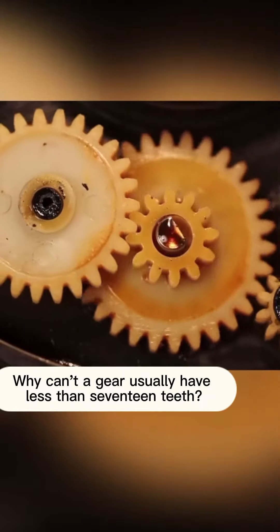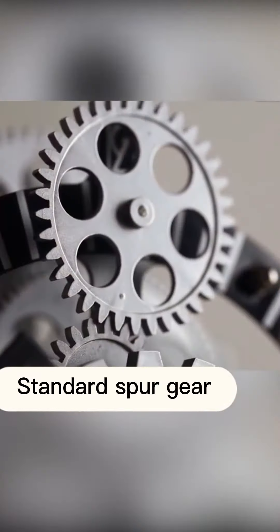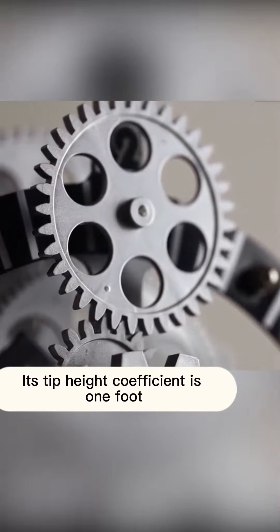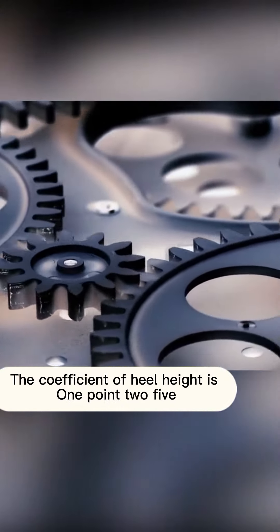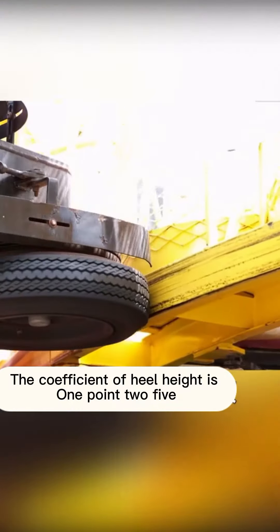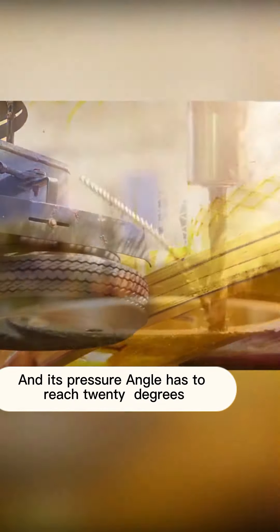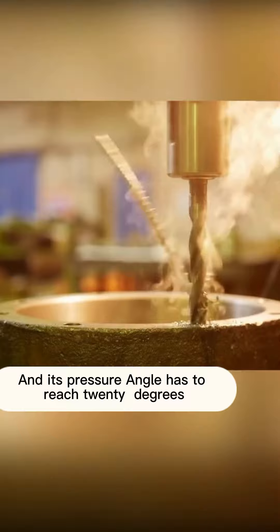Why can't a gear usually have less than 17 teeth? Standard spur gear, its tip height coefficient is one foot, the coefficient of heel height is 1.25, and its pressure angle has to reach 20 degrees.